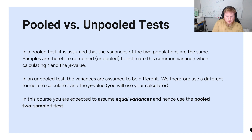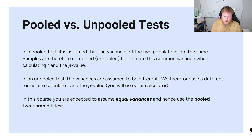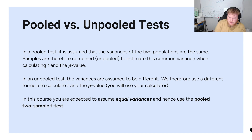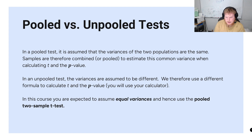In an unpooled test the variances are assumed to be different, and we have to use a different formula to calculate the value of t and the value of p. In this course we are always going to assume equal variances and therefore always use a pooled two-sample t-test.